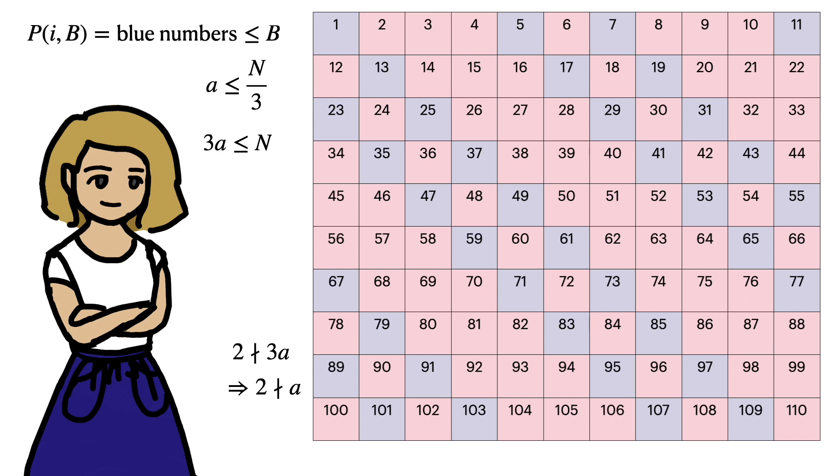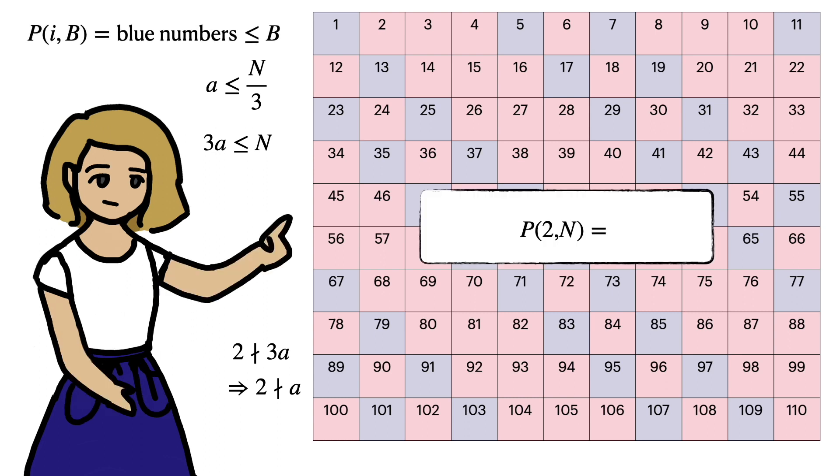Using this function, we can say that the number of blue squares left after two iterations is the number left after one iteration minus the number of blue a values below n/3. I'll send that up to the corner for later.